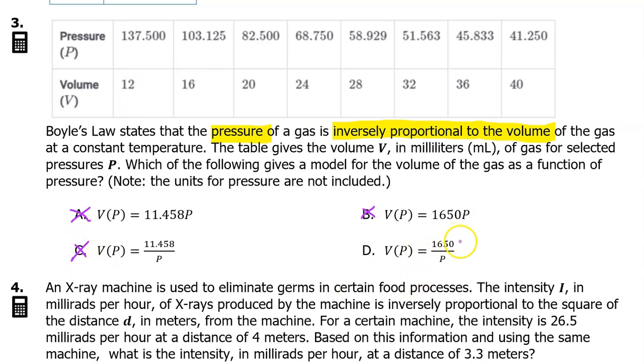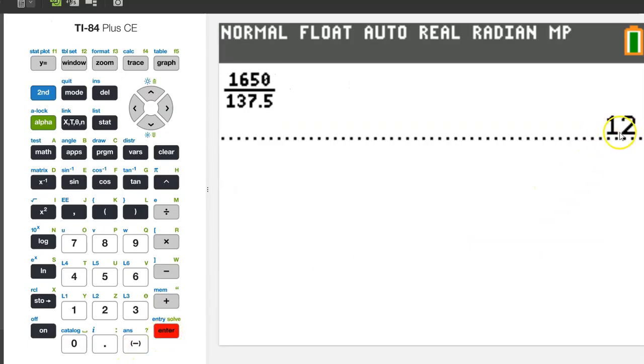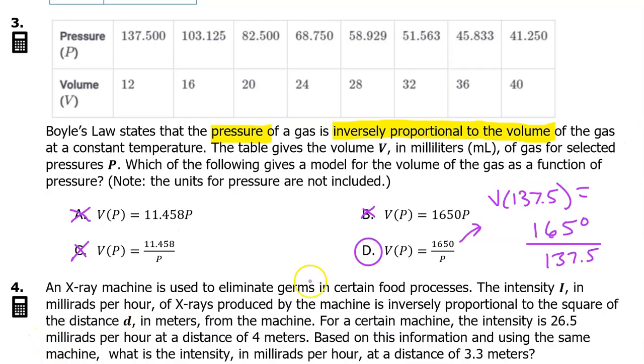Option D makes more sense. If we evaluate this formula at 137.5, then this would equal 1650 divided by 137.5. So, we have a much bigger number in the numerator than the denominator. So, it makes sense that this might be about 12. Let's go ahead and put it in a calculator and see what we get. Kabam! The answer is D.